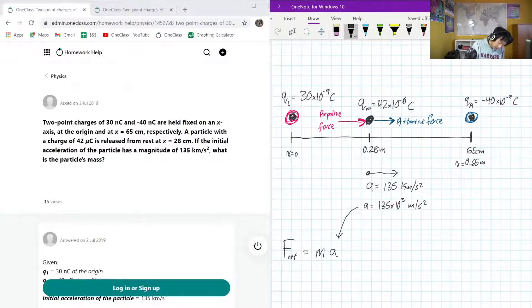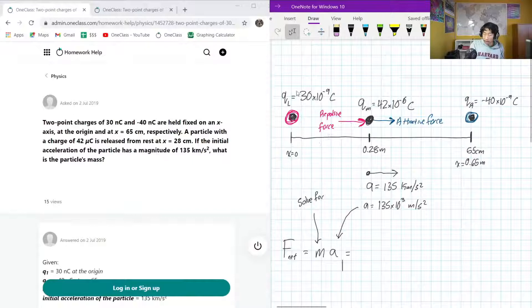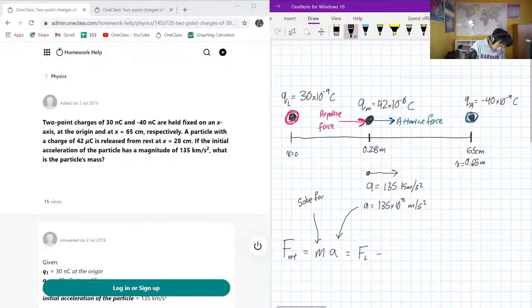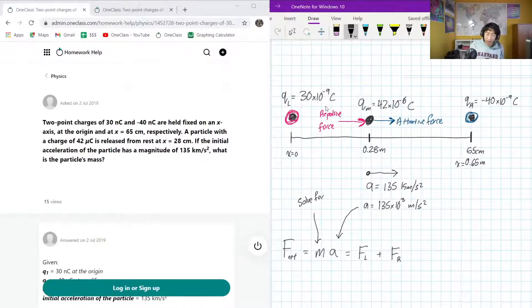Acceleration, well, we just calculated, or I mean, is given as this. This is what we're trying to solve for. And we know that our net force is going to be equal to our force contributions from both of these two, the two points, individually. Okay, so, to represent that, we can call that FL plus FR. So, the forces as caused by the left charge and the right charge.